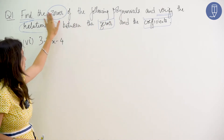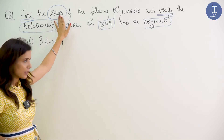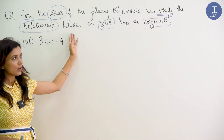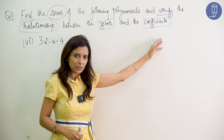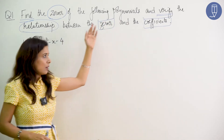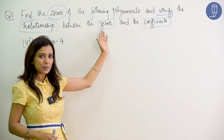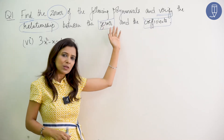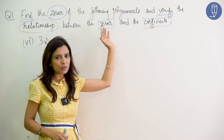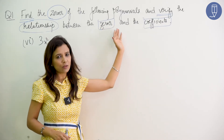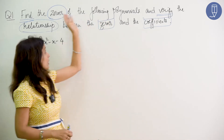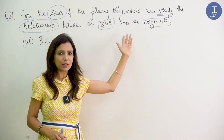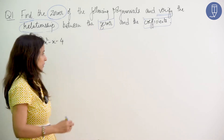What do we need to do? We need to find zeros and verify the relationship between the zeros and the coefficients. So, if we need zeros and coefficients, we have to find zeros first. So first of all, let's do step 1.